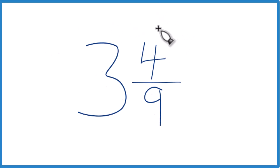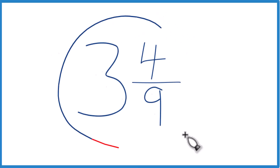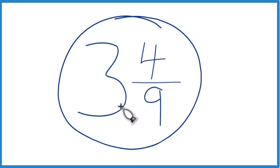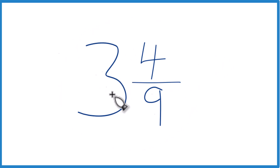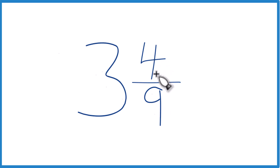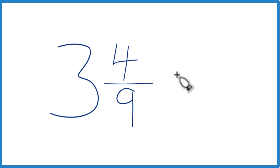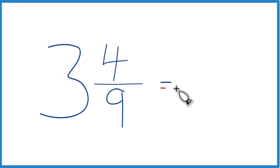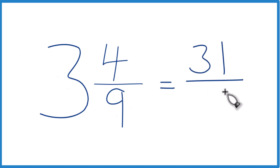Here's how you write the mixed number 3 and 4 ninths as an improper fraction, like this. You take the whole number, 3, so 3 times 9 — that's 27 — plus 4. So 27 plus 4 equals 31, and then you just bring the 9 across.